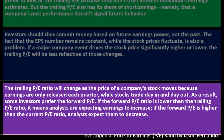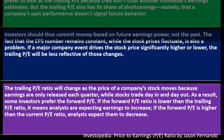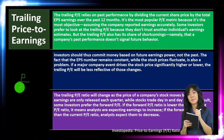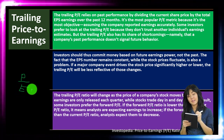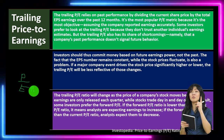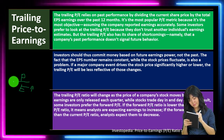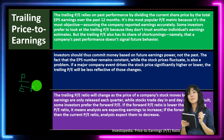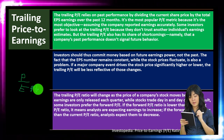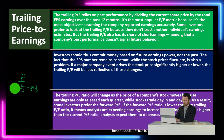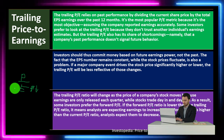If the forward P/E ratio is lower than the trailing P/E ratio, it means analysts are expecting earnings to increase. If the forward P/E is higher than the current P/E, analysts expect earnings to decrease. When expected future earnings are higher, the denominator increases, making the forward P/E lower. Conversely, if future earnings are expected to be lower, the denominator decreases and the forward P/E rises.